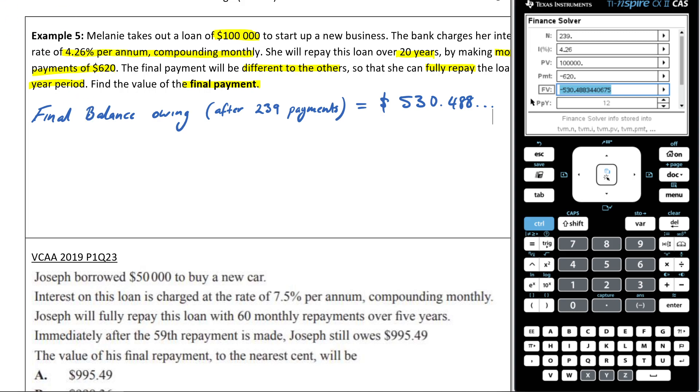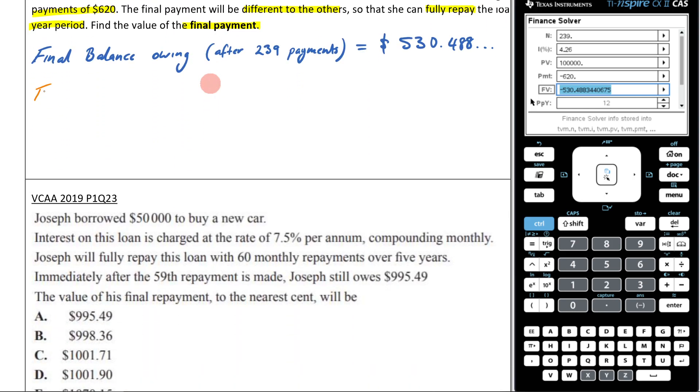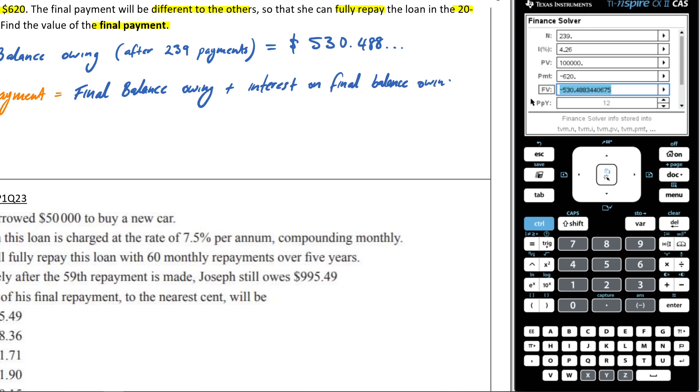To now figure out my final payment, what it's going to be equal to, is, it's going to be equal to my final balance owing, and then I need to plus onto that. Now, this is the important part. It's the interest, but it's the interest on that final balance. So, I'm going to write it in, interest on the final balance owing.